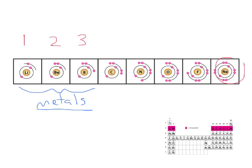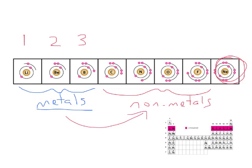Neon of course already has a full valence shell, so it doesn't need to form bonds. Over on this side are the non-metals. Their valence shells are almost full, so that's going to influence how they form bonds. Either they're going to gain more electrons — and where do they get them? Well, they steal them off the metals. Or they can actually share electrons among themselves.